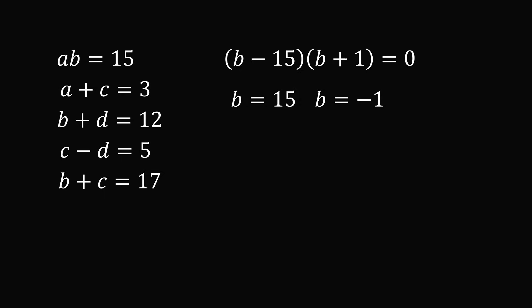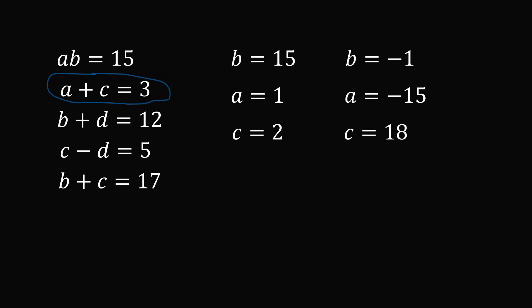Now, let's go through all the other variables. We're going to have to consider two cases. So, one case will be b is equal to 15 and the other case is b is equal to minus 1. So, from the first equation, a times b is equal to 15. If b is equal to 15, then a is equal to 1. If b is equal to minus 1, then a will need to be equal to minus 15. Let's look at a plus c is equal to 3. If a is equal to 1, then c will be equal to 2. And if a is equal to minus 15, then c will be equal to 18.